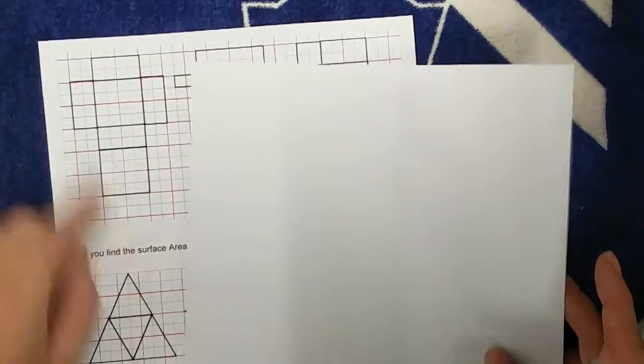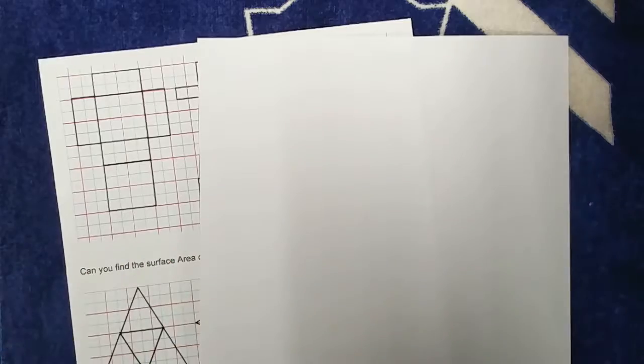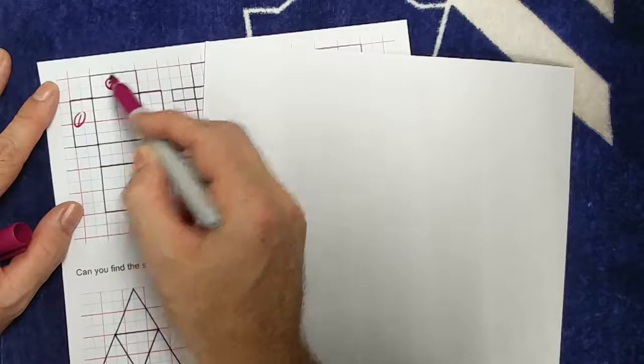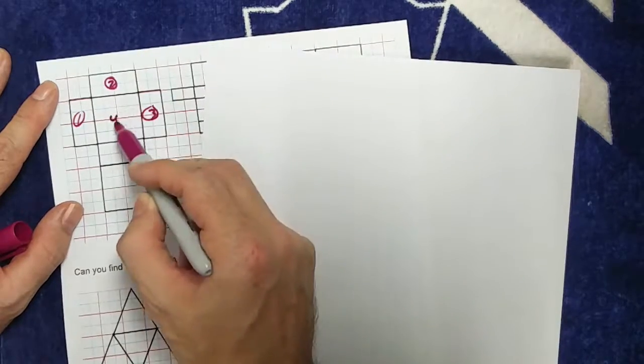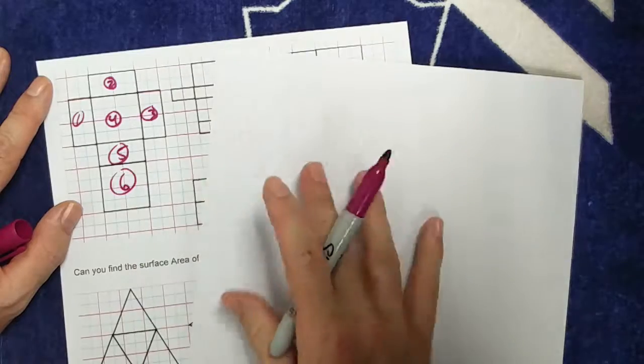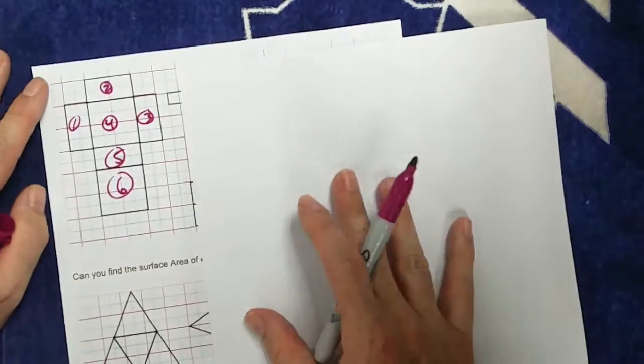So with a rectangular prism, we can do first entry level by just finding what's the area of 1, what's the area of 2, 3, 4, 5, and 6? I can find the area of those individually and just add them all up together.